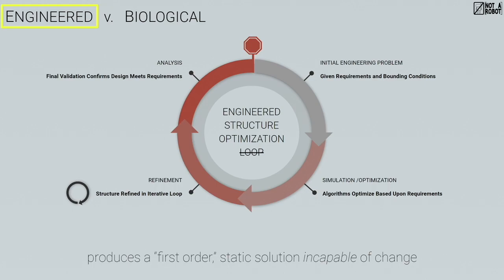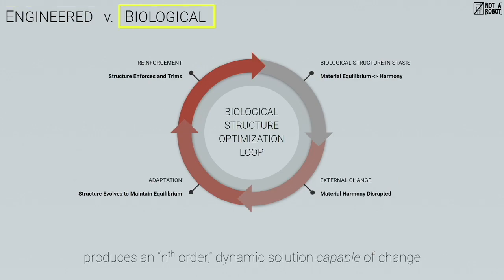What I find interesting is that the engineering loop is really confined only to the refinement stage. Once you produce the final additive part, it is a first-order static solution. Very rarely does it biologically respond to environmental conditions — it's static. We print metal, we print plastic, and those things don't change. I see many people getting inspiration from biology and then printing in titanium, which looks organic, but the whole reason bone is shaped like bone is because it's vascularized, has blood flow, can change, breaks, and repairs itself.